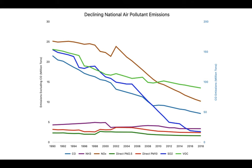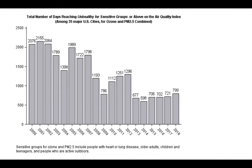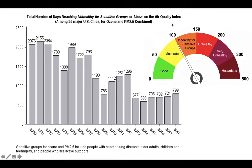Declining national air pollutant emissions since 1990 is fantastic. It's also increased visibility across the country — the dark blue and light blue circles indicate improvement in visibility due to reduced air pollution, while red and pink indicate a bad change, which we only see in Puerto Rico. Additionally, the number of days reaching 'unhealthy for sensitive groups' on the AQI — between 100 and 150 — has dropped substantially, almost to a third of what it was in 2000. That's really great improvement.